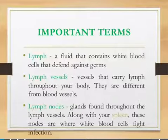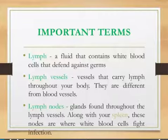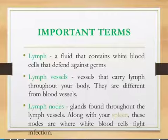These two systems work so closely together that almost everywhere there are blood vessels, there are also lymph vessels. The lymphatic system consists of a complex network of organs, vessels, and nodes throughout the body. The system collects excess fluid that leaks out of the blood capillaries into the area between the cells.